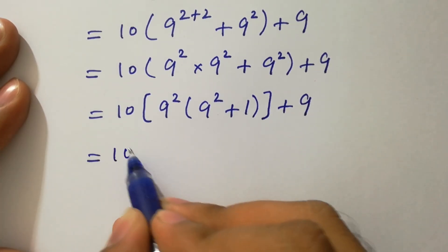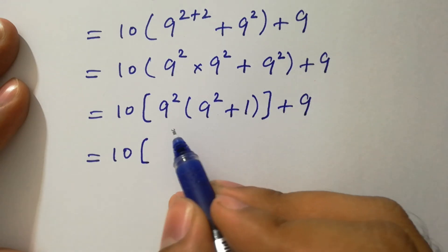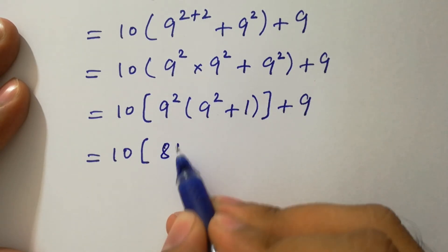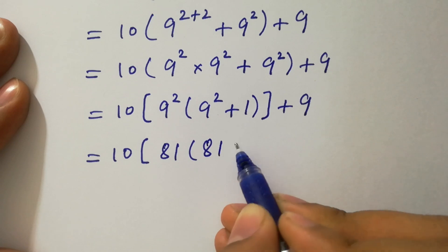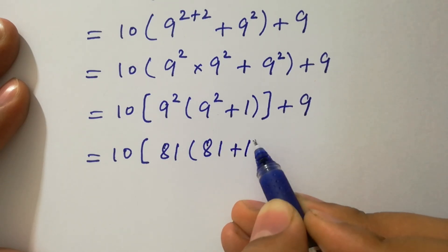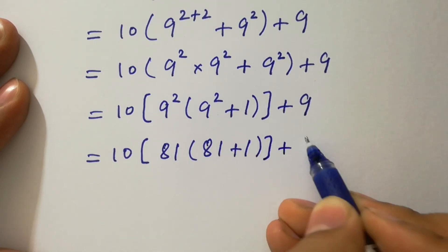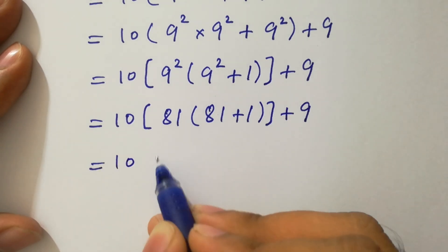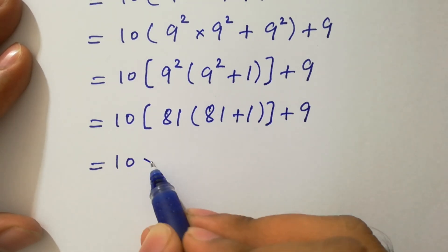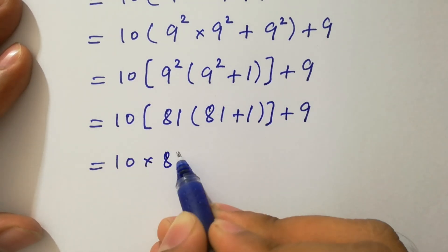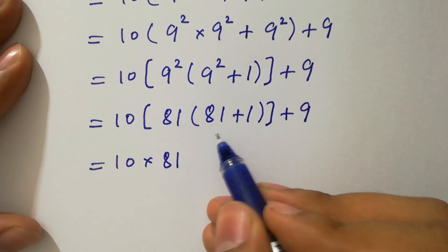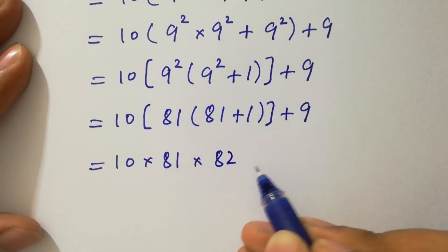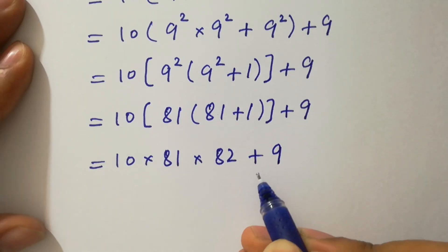We have 9, and 9 times 9 gives us 81. So 81 plus 1 plus 9, then 81 as it is, and here we have 81 plus 1 which gives us 82, plus 9 as it is.